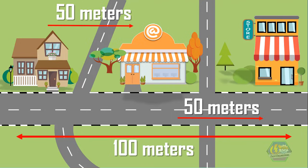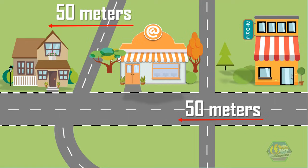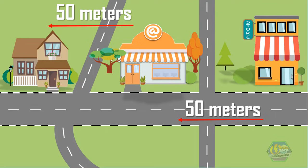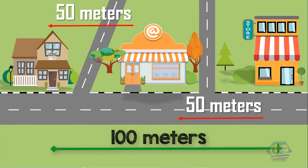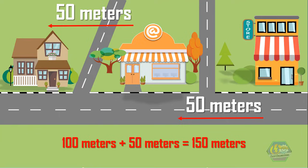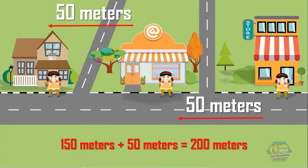When Suzy finished her business in the convenience store, she decided to go home. She will pass again the internet cafe until she reaches her house. The length of her return journey will be 50 meters to reach the internet cafe and another 50 meters to reach her house. So the total path length from her house to the convenience store is 100 meters. Going home, when she reaches the internet cafe it will be 100 plus 50 meters, which equals 150 meters. And when she is back to her house, it will be 150 plus 50 meters, which equals 200 meters.